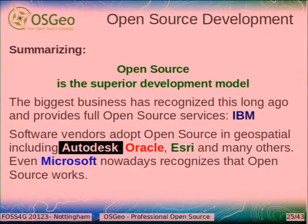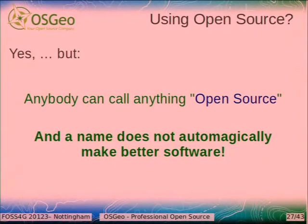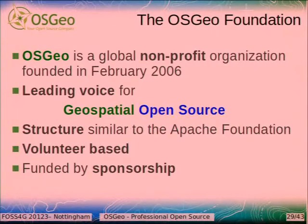Open source software development is the superior development model, and all the big businesses — including IBM, Autodesk, Oracle, Esri, and Microsoft — support open source and say it's a cool thing. If they say it's a good thing, and they have a vital interest in not having open source because they live off selling licenses, open source must actually really be a good thing. But anybody can call anything open source — so how do you know the software you want to use is actually good? This is where the Open Source Geospatial Foundation comes into play, OSGEO, the host of this conference. It's a nonprofit organization founded in 2006, the leading voice for geospatial open source.